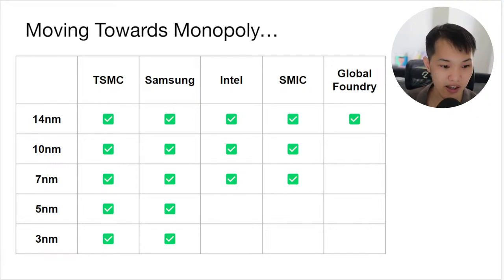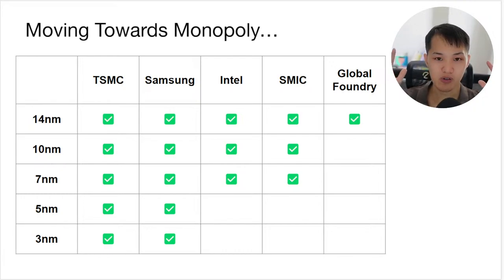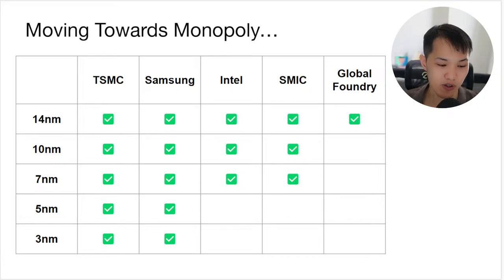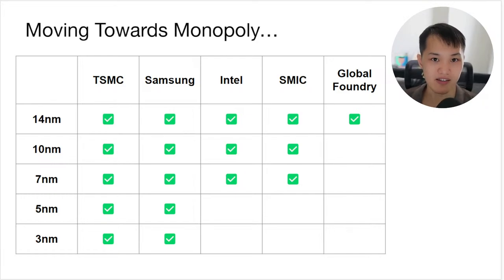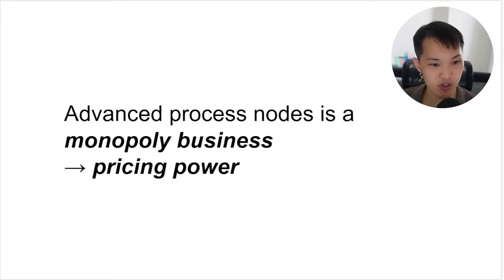When you go to 5nm and 3nm, not many companies can do it — it becomes almost like a monopoly. At 3nm, only TSMC and Samsung are capable. Intel is trying to get into 5nm and 3nm but we've yet to see results. Although we tend to see semiconductors as a big industry, at the advanced process nodes there are only one or two companies, meaning they have monopoly power and can dictate prices. That's the key point — TSMC and Samsung have monopoly-like power at advanced nodes, giving them strong pricing power, which is why they can command very high gross and net margins.